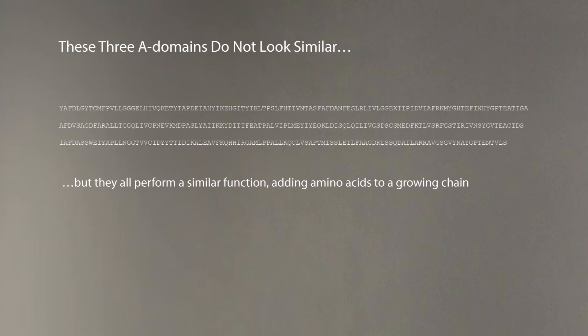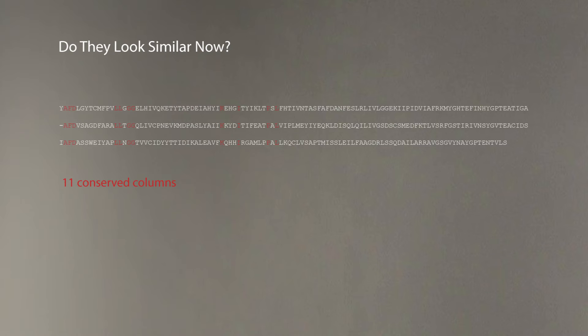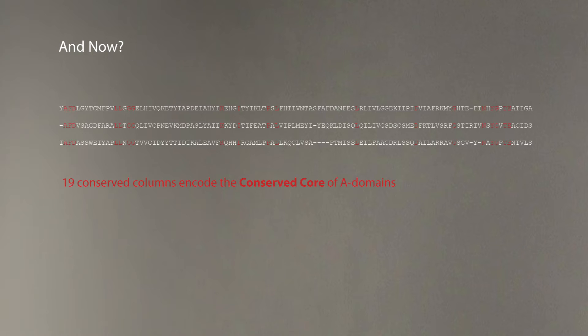He looked at the amino acids in these three adenylation domains and found very little similarity. There is hardly any similarity here, only three conserved columns, which is statistically insignificant. However, if you just start shifting some of the sequences, like I just did, you see 11 conserved columns. And if you continue doing this, suddenly you reveal 19 conserved columns. This is statistically very significant, which reveals that these adenylation domains are indeed similar.